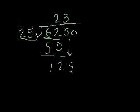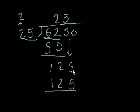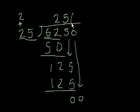So if we say 25 goes into 125 five times, then we just multiply. 5 times 5 is 25. 5 times 2 is 10 plus 2 is 125. So it goes in exactly. So 125 minus 125 is clearly 0. Then we bring down this 0. And the 25 goes into 0 zero times. 0 times 25 is 0. Remainder is 0. So we see that 25 goes into 6,250 exactly 250 times.